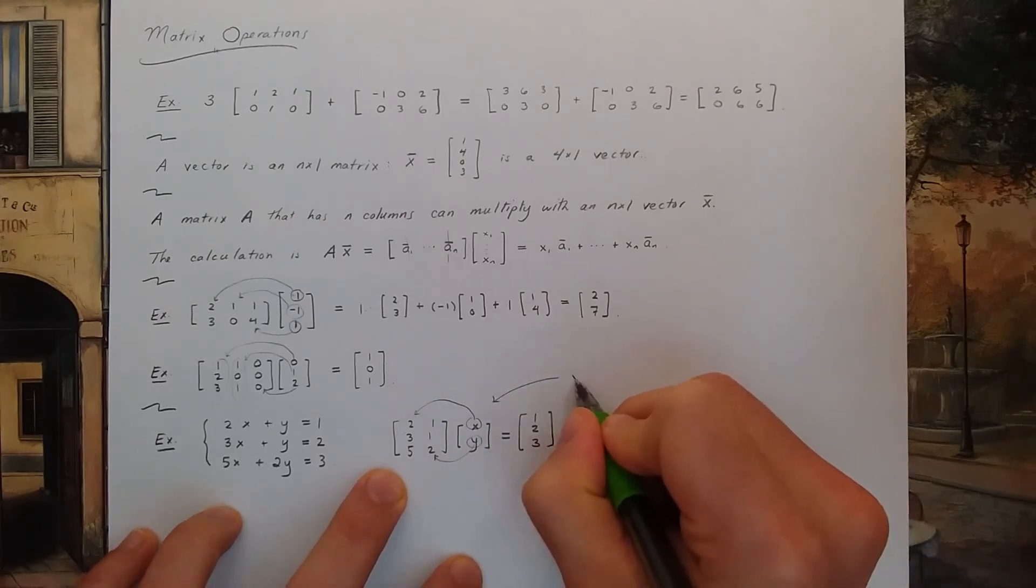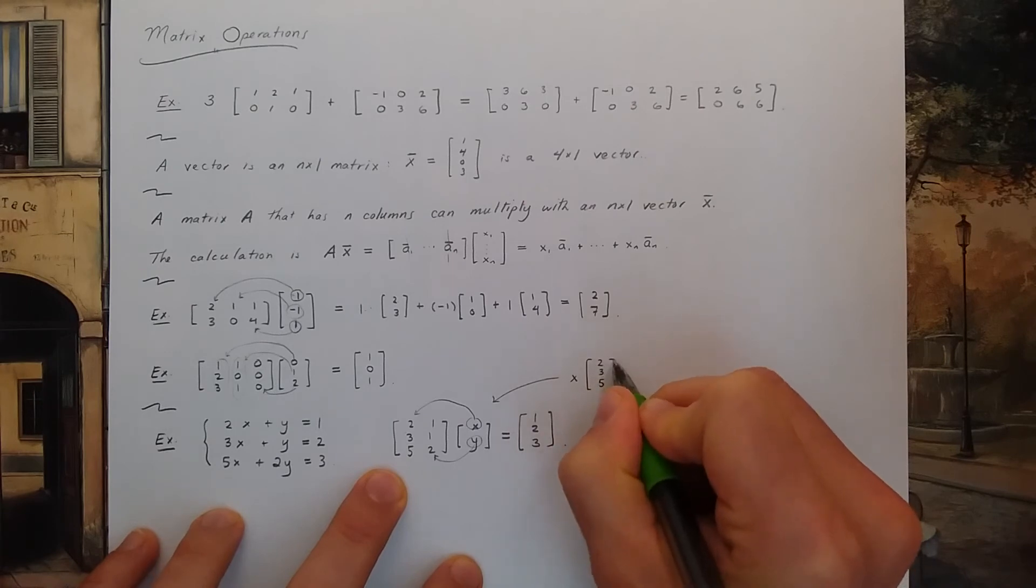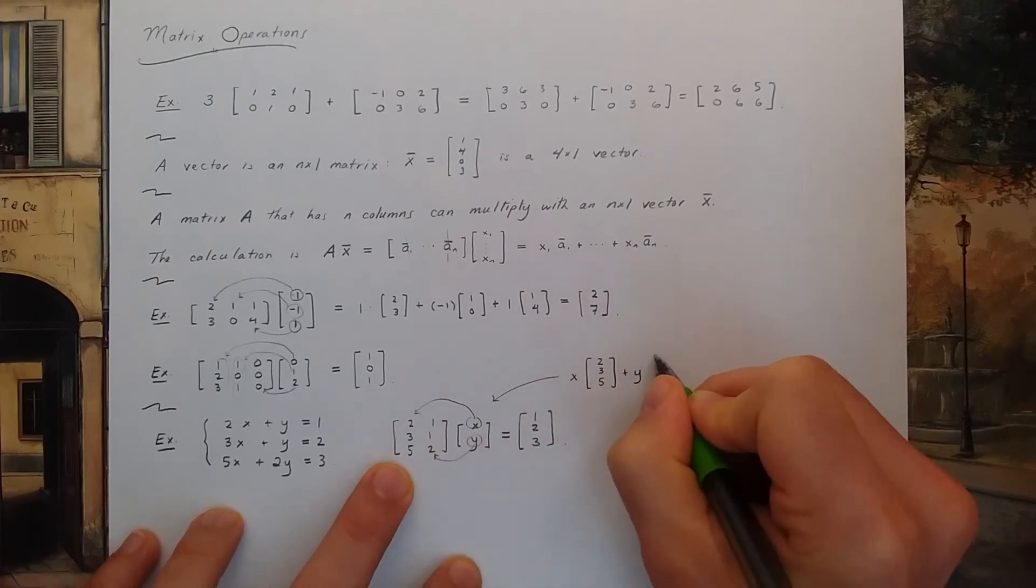So this becomes x times 2, 3, 5 plus y times 1, 1, 2.